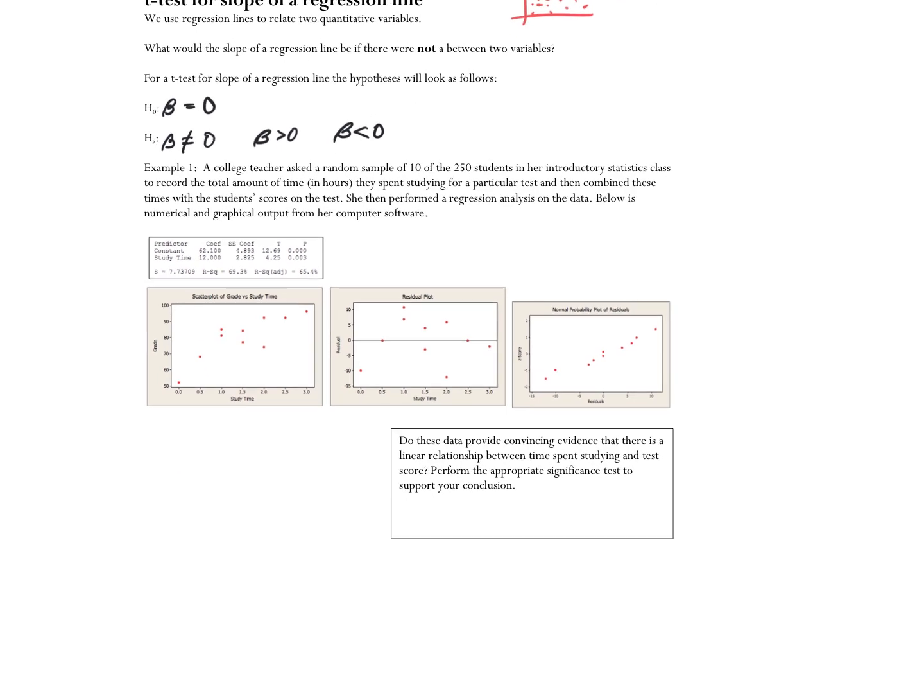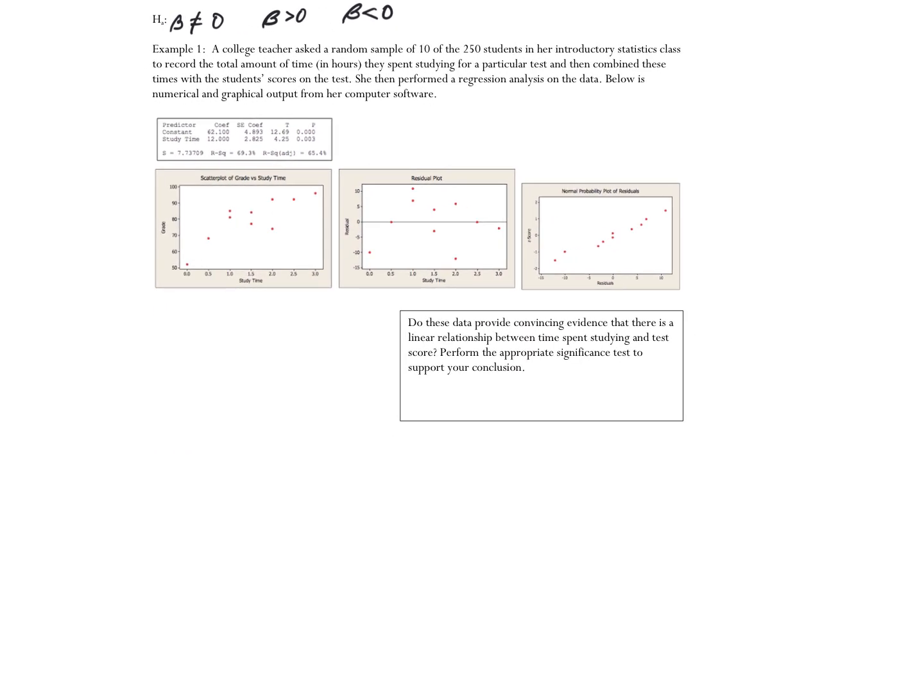So let's take a look at this first example. A college teacher randomly asked a random sample of 10 of her 250 students in her stats class how much time they spent studying for the test, and then their scores on the test. And so you can see we have the scatter plot, the residual plot, and this time we have a different kind of graph of our residuals. This is called a normal probability plot.